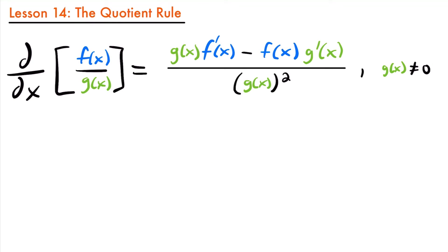Welcome back. Last time we looked at the product rule for taking derivatives, where we learned how to take the derivative of two functions multiplied together, but now it's time to look at the quotient rule, where we look at how to take the derivative when you have one function divided by another, or the quotient of two functions.